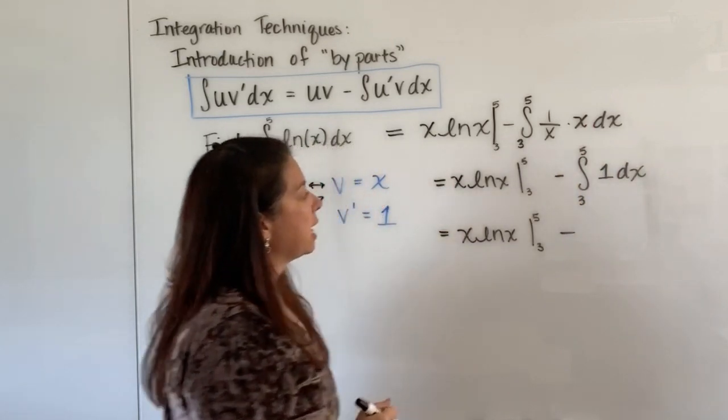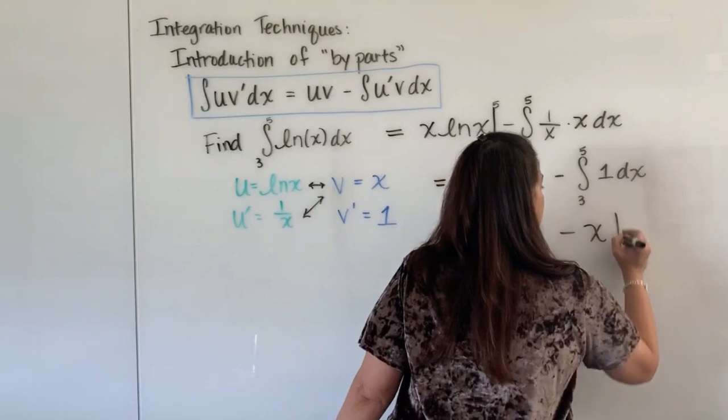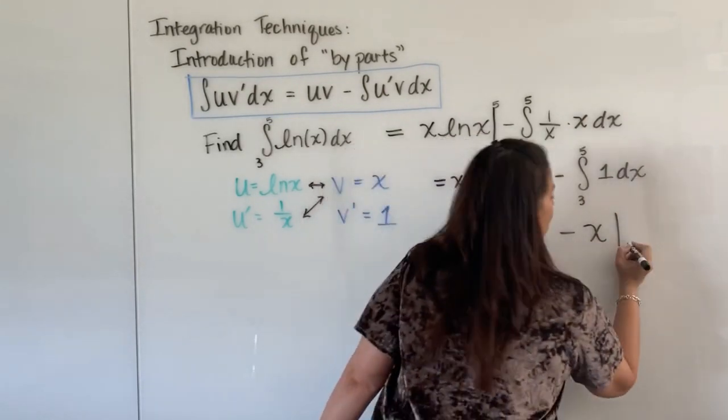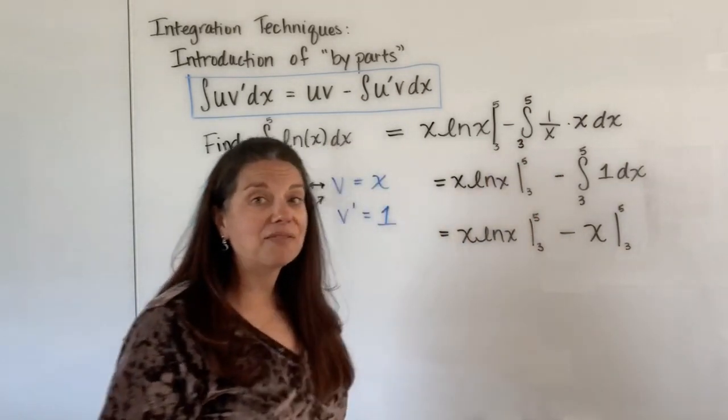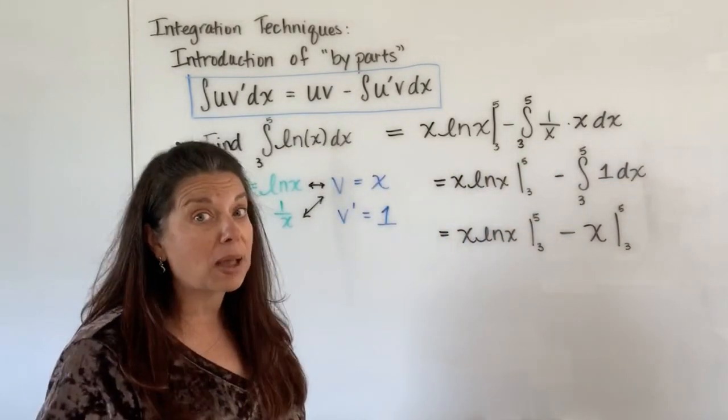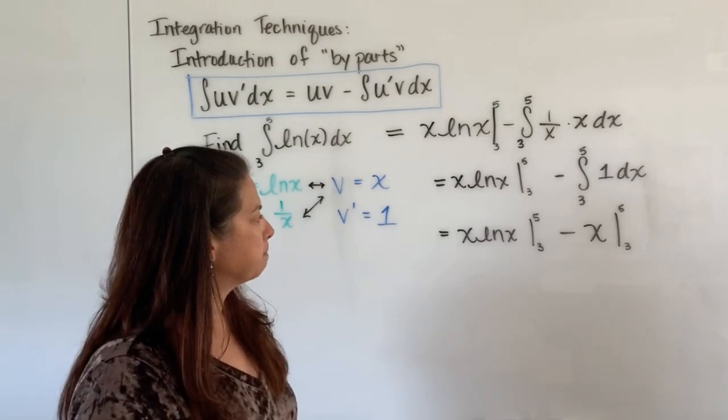So I have now that this is equal to x natural log x evaluated from 3 to 5 minus here, when I take its antiderivative or its integral, I get x like we talked about. Of course, though, evaluated from 3 to 5. I don't need my plus c here because I have a definite integral. We know what those boundaries are. We're only looking at that integral from 3 to 5 in this case.